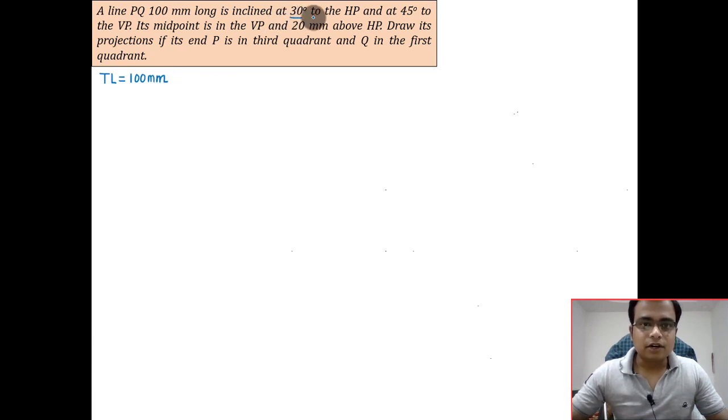Now this line is at an angle of 30 degrees with the HP and 45 degrees with the VP. So we have theta as 30 degrees and phi as 45 degrees.